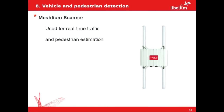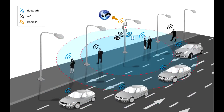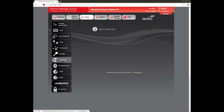And finally we are going to see the vehicle and pedestrian detection. For that we are going to use the Meshlium scanner with the Bluetooth and WiFi cards. Thus it will be possible to perform an estimation of the traffic and pedestrian flow. It is Meshlium, the device which sends all the information over the internet. In this video we are going to see how to use both WiFi and Bluetooth scanners.